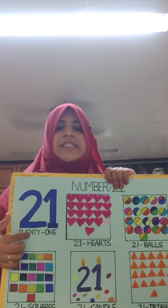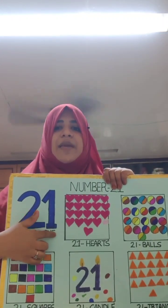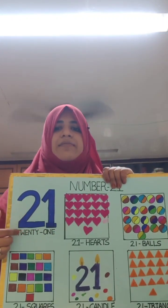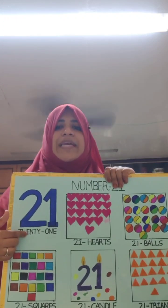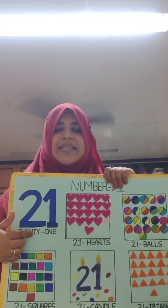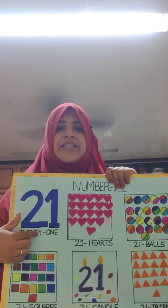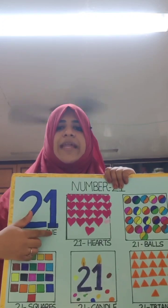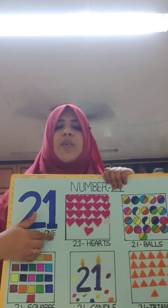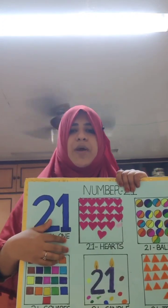Here, this is the number name of 21. T, W, E, N, T, Y — twenty. O, N, E — one. 21.